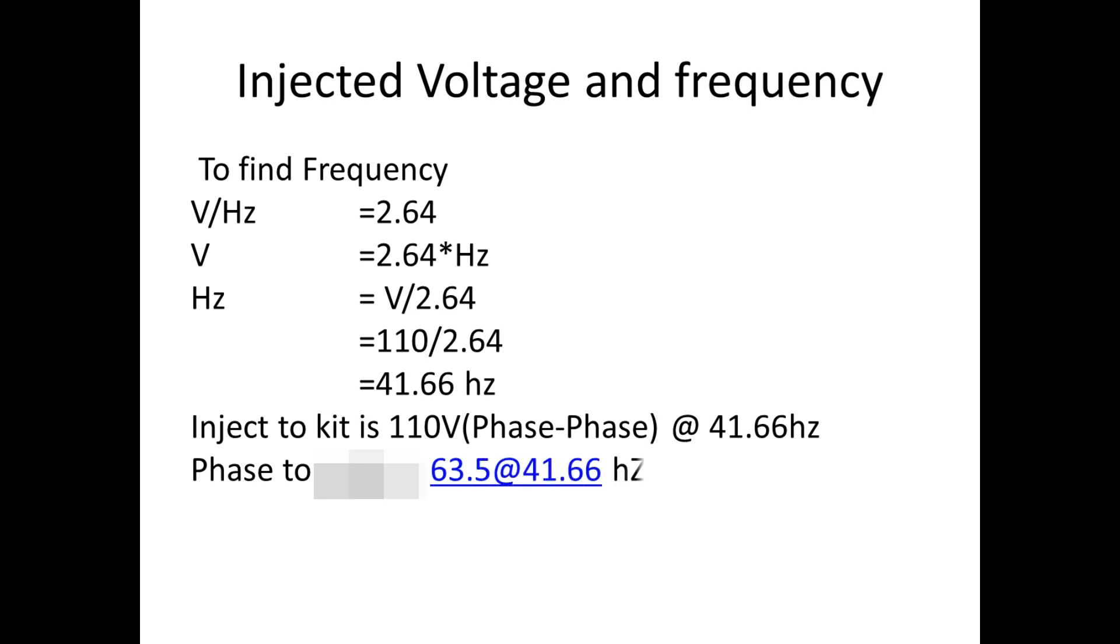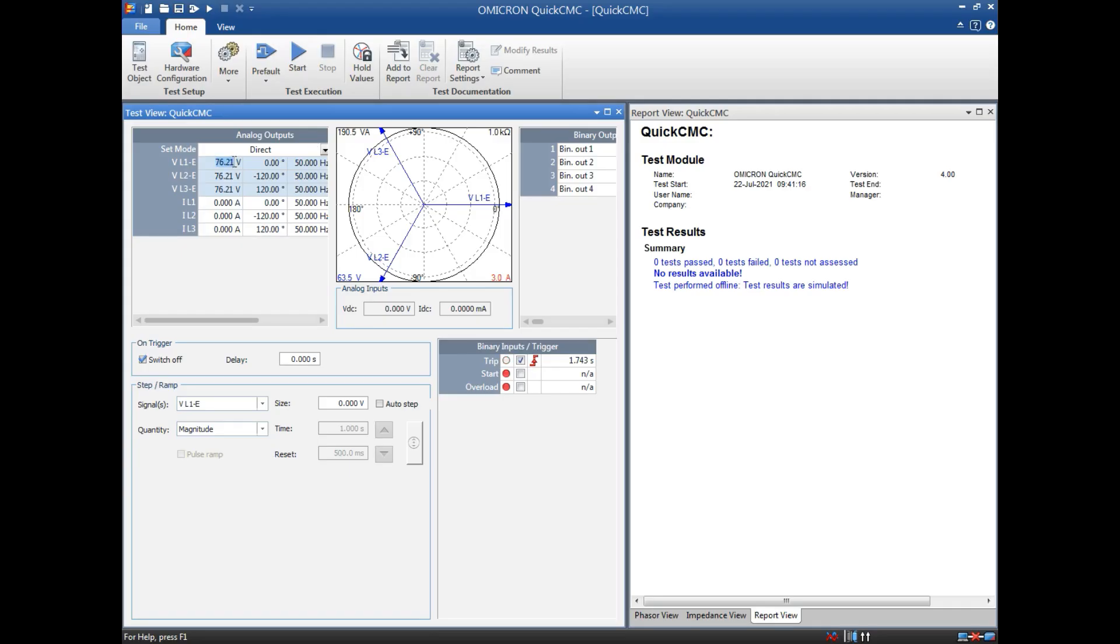To inject with kit, we have to inject 110 volt with 41.66 hertz. So this 110 is phase to phase. In order to convert into phase to neutral, you have to divide by 1.732. After converting, we get 63.5 volt. From the kit, we are going to inject 63.5 volt with 41.66 hertz.